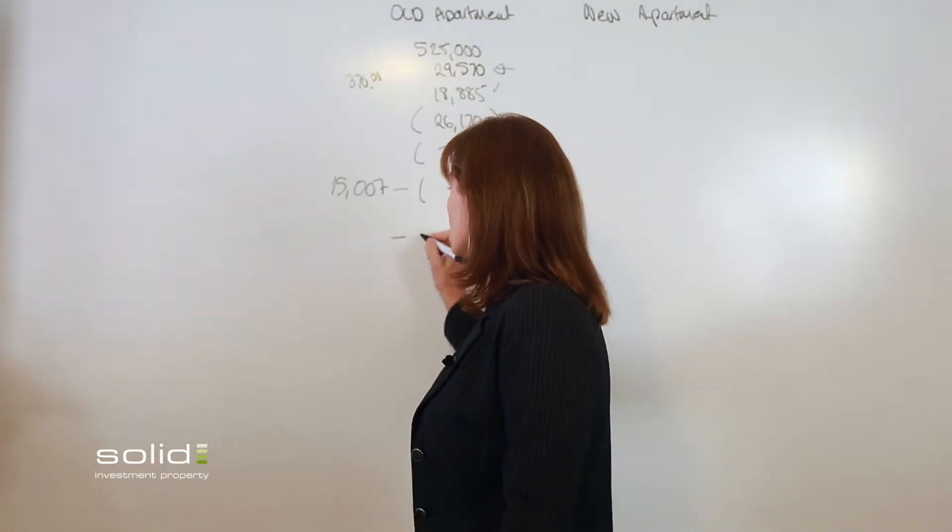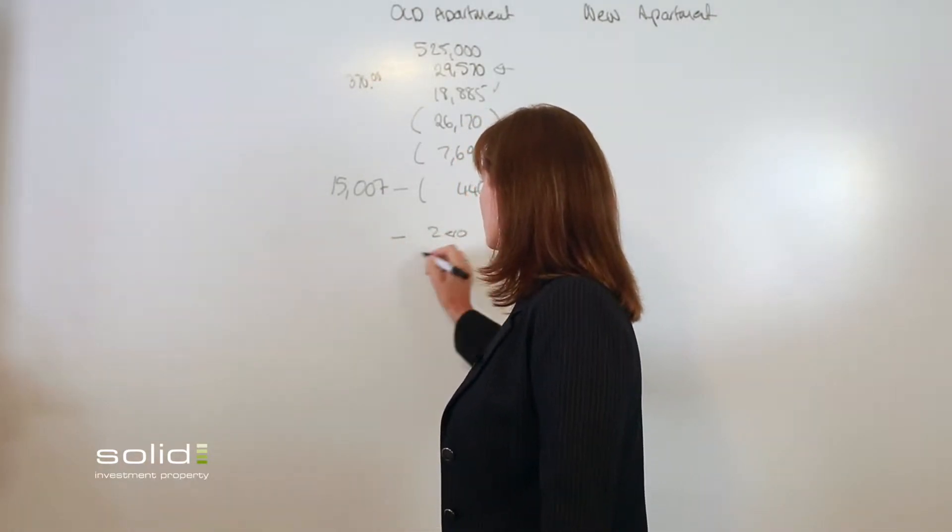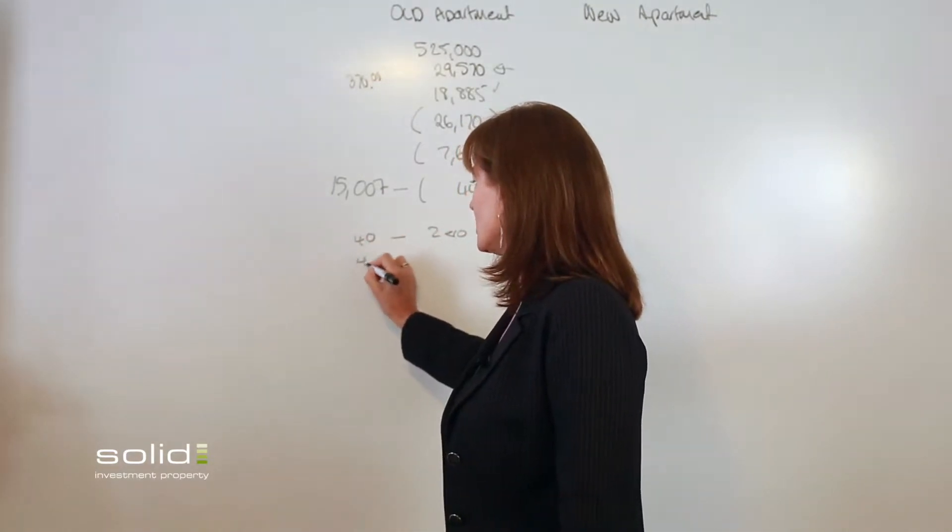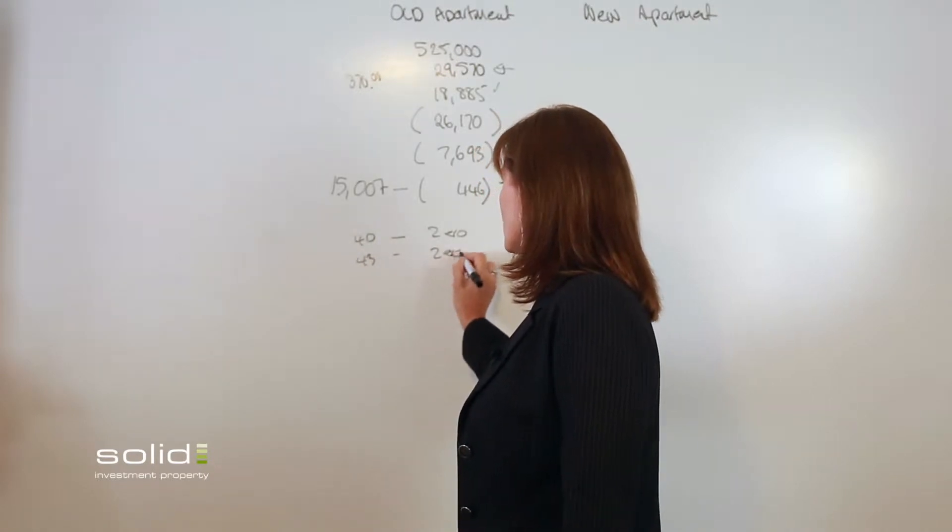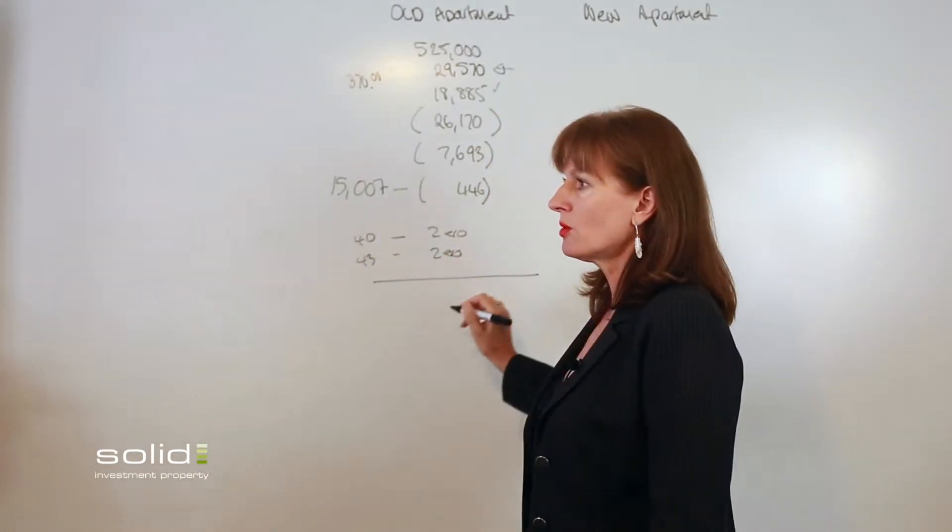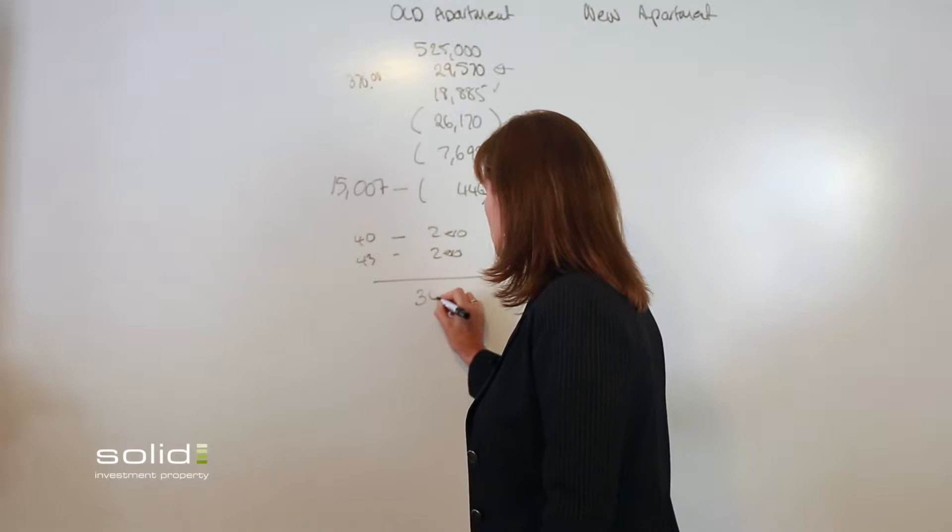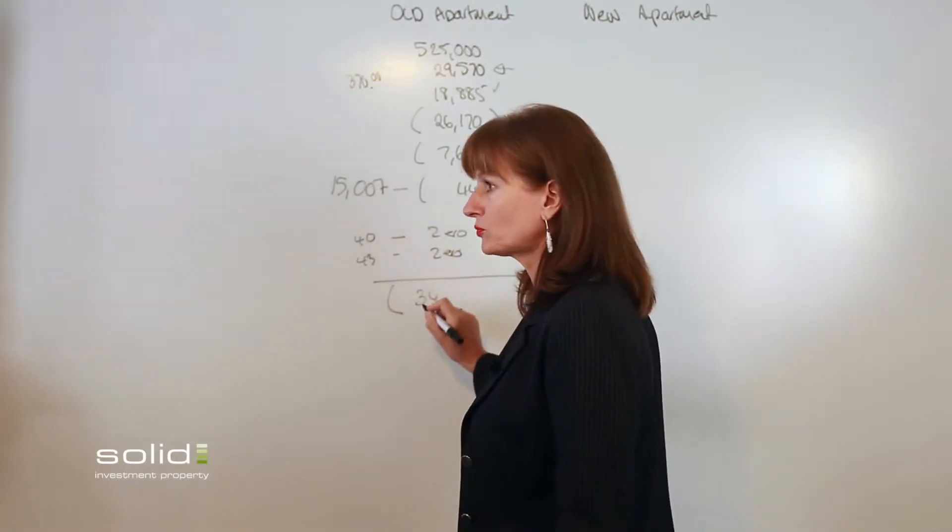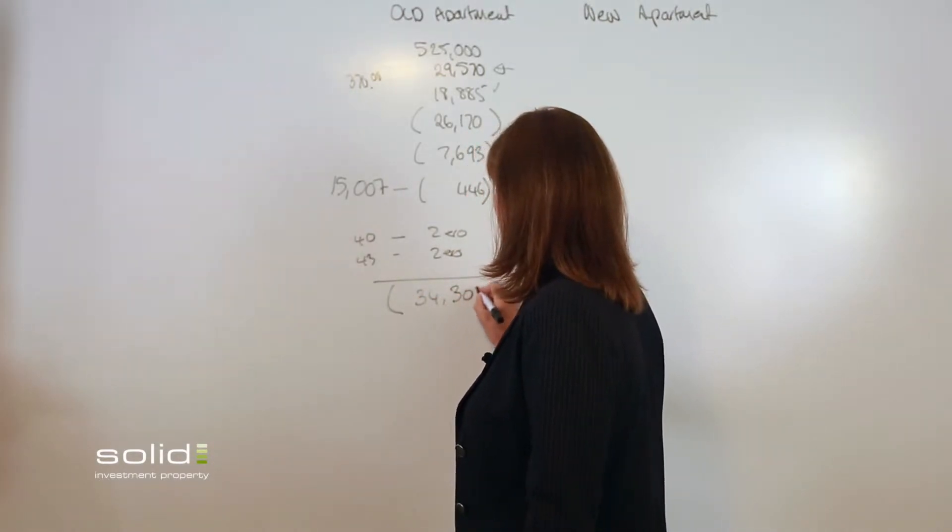Okay, now because it's an old property, there is zero depreciation for your section 40 and there's zero for your section 43. So what we've got here is a total loss on your property of $34,308.